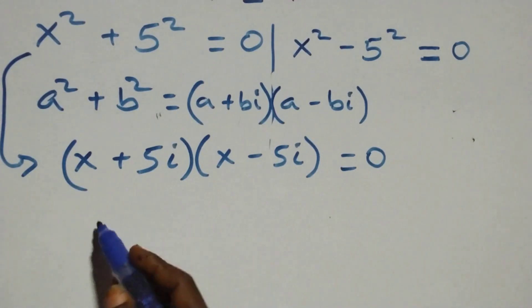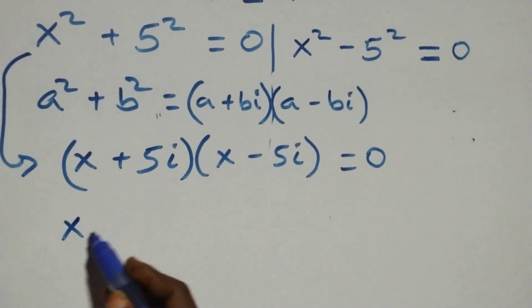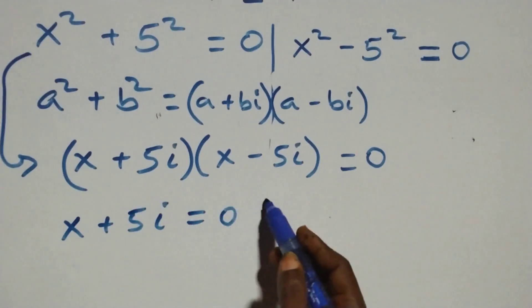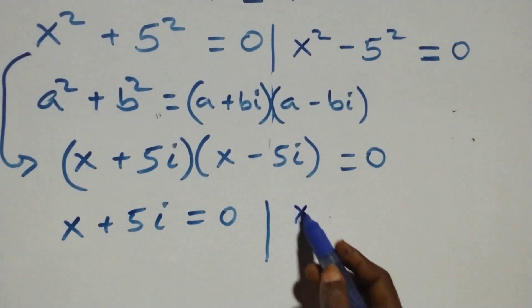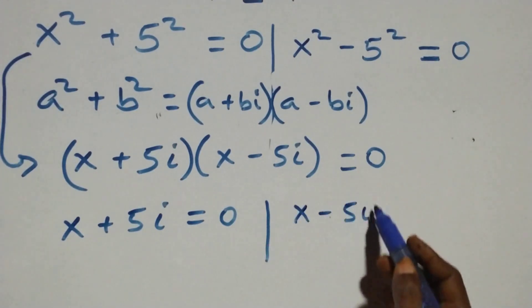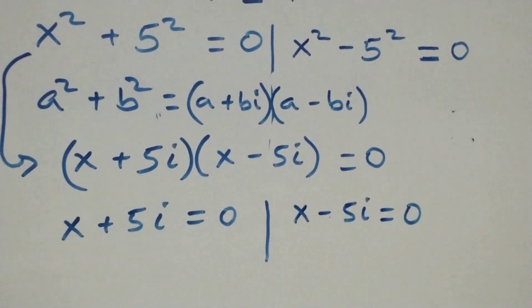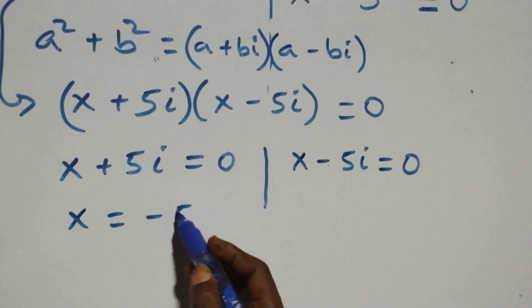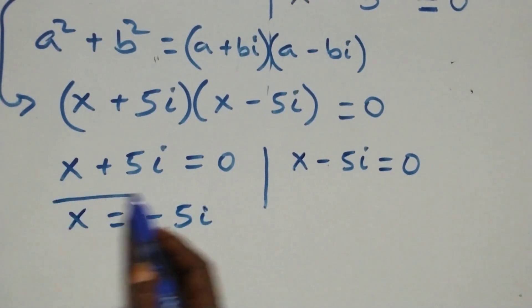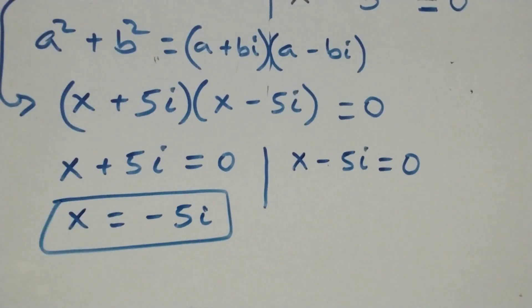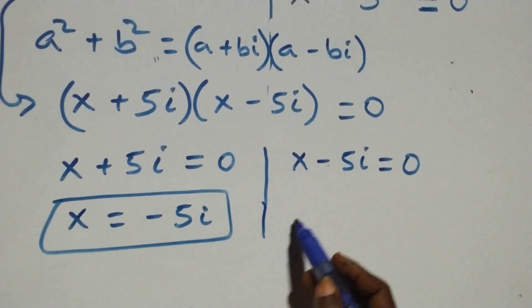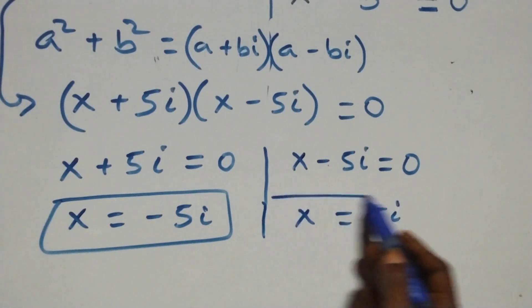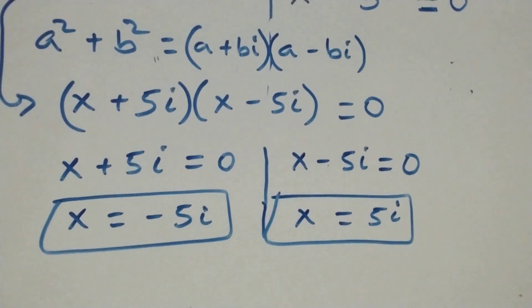Then here also we have two possible cases: x plus 5i equals to 0, or x minus 5i equals to 0. Solving here, we have x equals to minus 5i, which is a complex solution, and x equals to 5i, which is also a complex solution. We have two complex solutions.